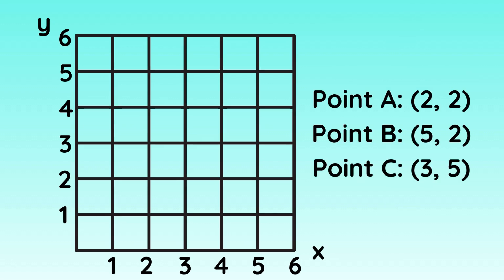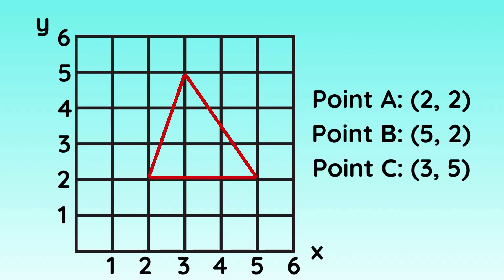So here we have our coordinates. Point A: 2, 2 — so 2 across and 2 up. Point B: 5, 2 — so 5 across the x-axis and 2 up the y-axis. And Point C: 3 across and 5 up. If you plot those points correctly, your shape should look like this: a triangle.